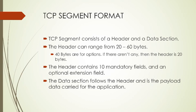The TCP segment consists of a header and a data section. The header can range from 20 to 60 bytes; typically a header is 20 bytes, with the remaining 40 bytes reserved for options. The header contains 10 mandatory fields and an optional extension field. The data section follows the header and is the payload data carried for the application.